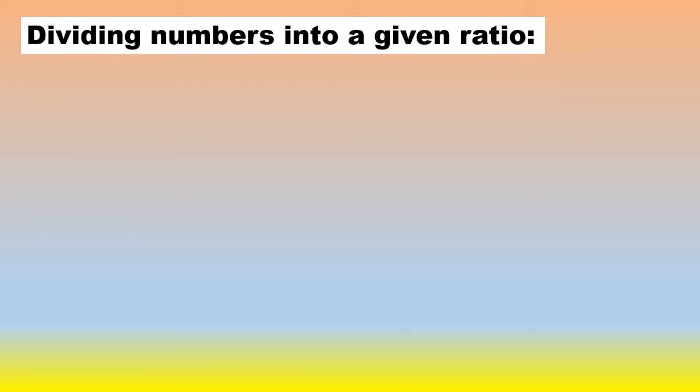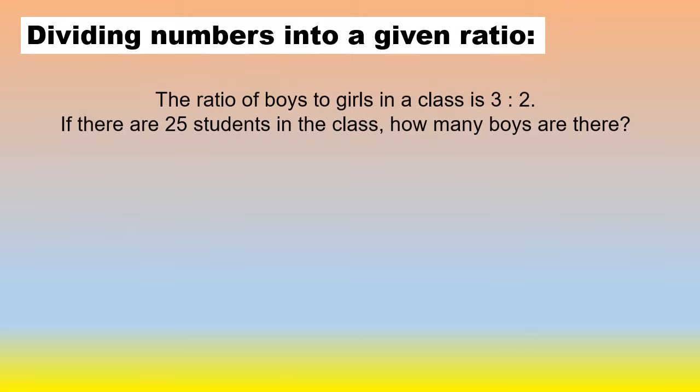Let's have a look at another example, dividing numbers into a given ratio. The ratio of boys to girls in a class is 3 to 2. If there's 25 students all together in the class, how many boys are there?